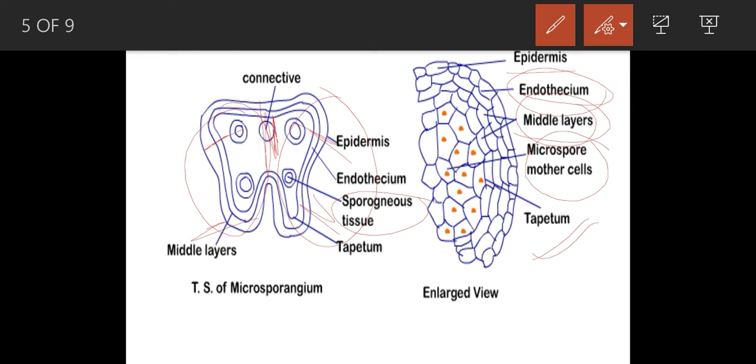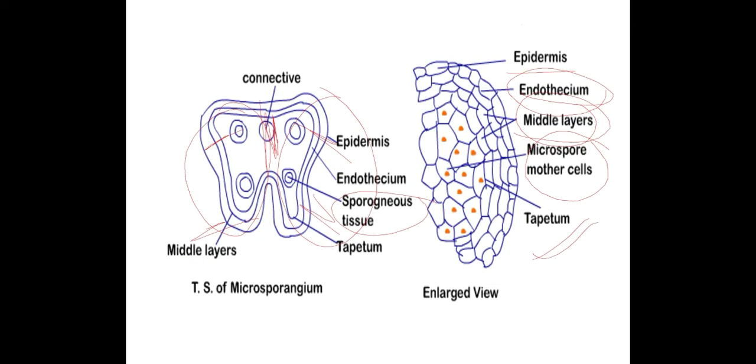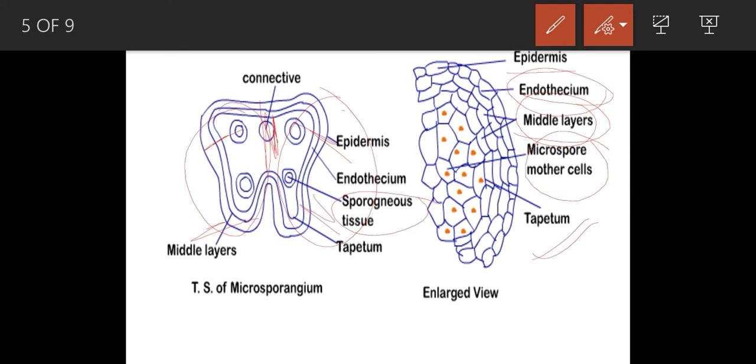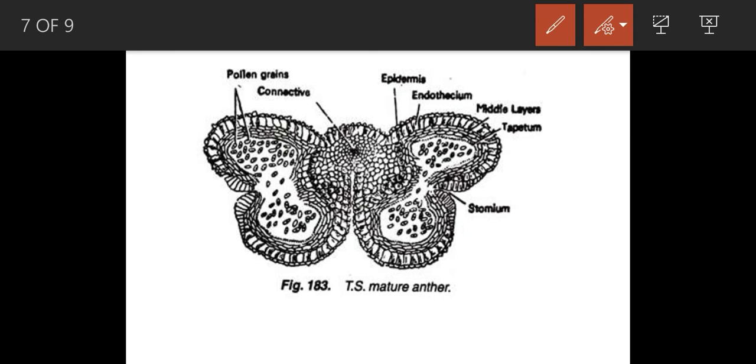The epidermis performs a protective function. Between the epidermis cells, a stomium is present, which we call a longitudinal furrow. This stomium is present between two pollen sacs. One pollen sac is present here and another here, with stomium present between both of them.